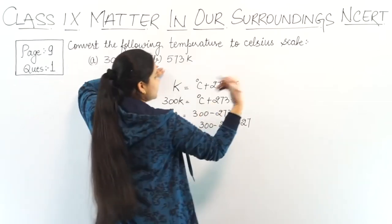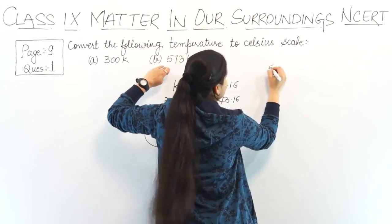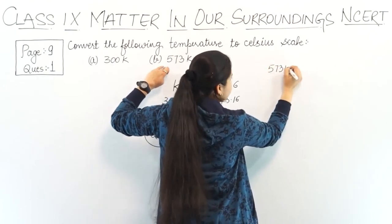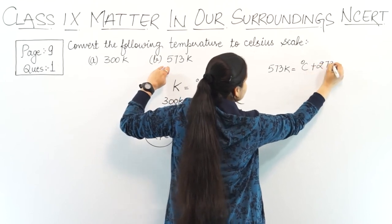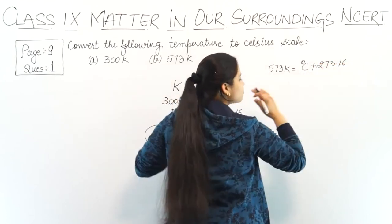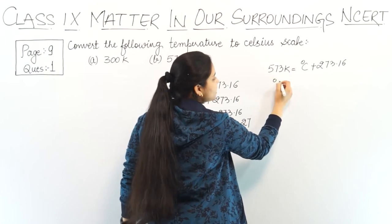Now coming to part B. Same thing - we repeat: 573 Kelvin equals degree Celsius plus 273.16. We can ignore the .16.